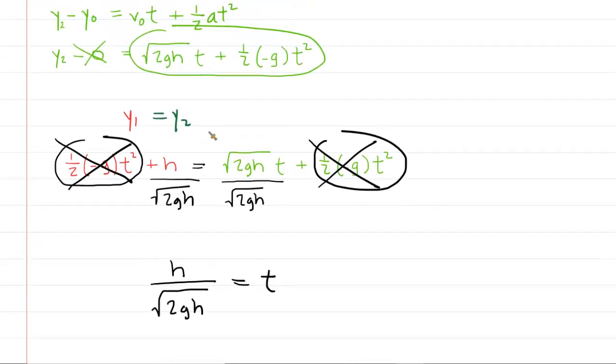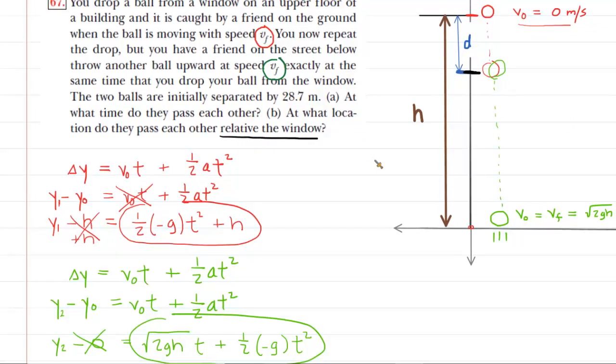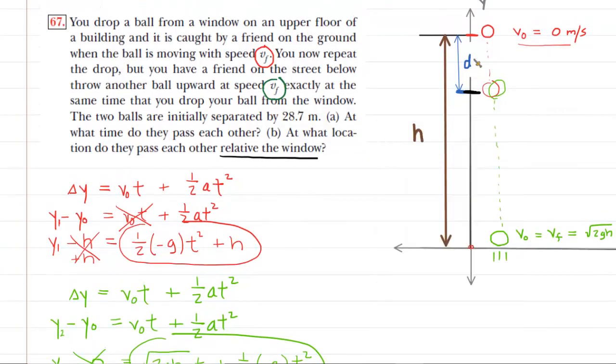Let's see what's going on in part B. In part B, the question asks, at what location do they pass each other relative to the window? And basically because it says relative to the window, we're actually searching for that distance D. There's a couple of ways we could do that, but perhaps one way we could select is to figure out this y coordinate here. Remember, this is y1. This is the final y coordinate of the red ball as it passed the green ball. If we could find y1, then all we have to do is subtract that from H, and that would give us the value of D.